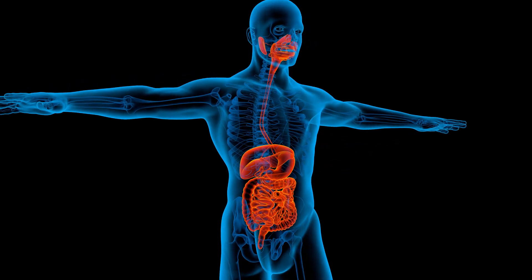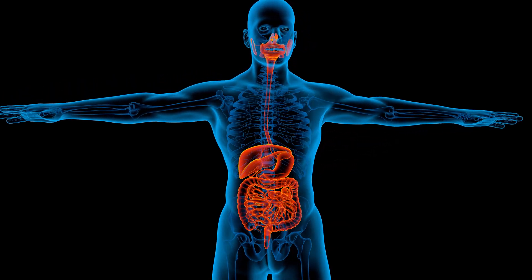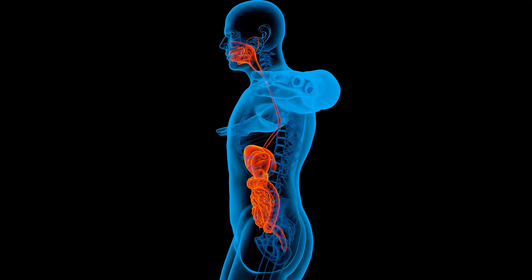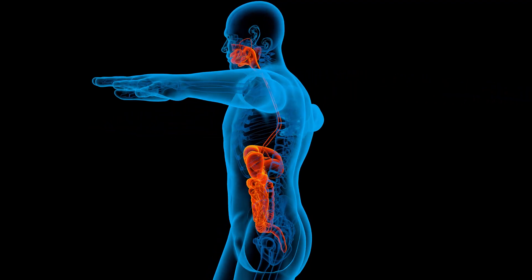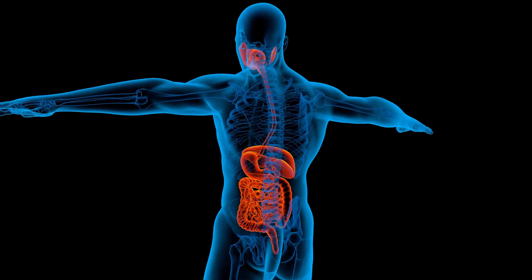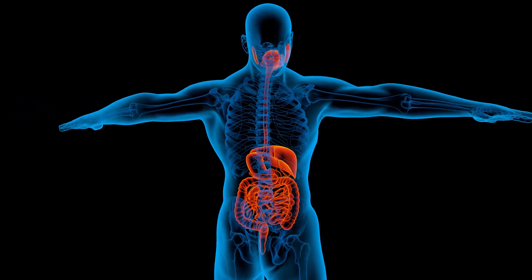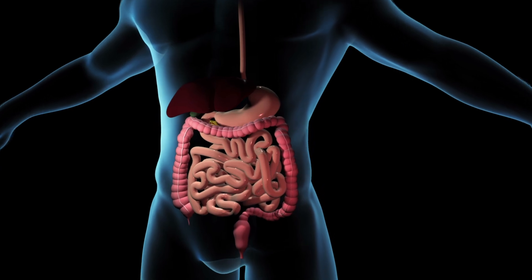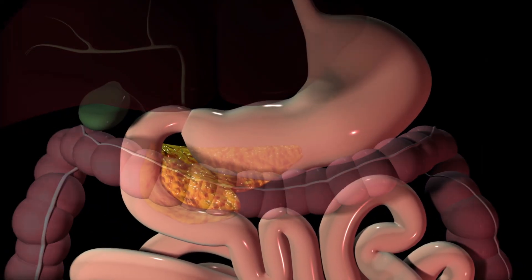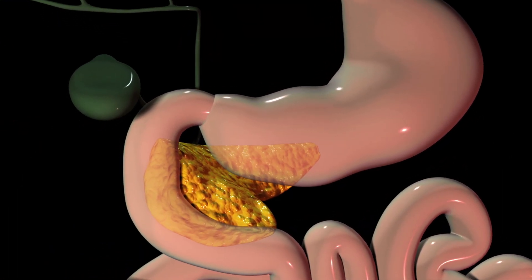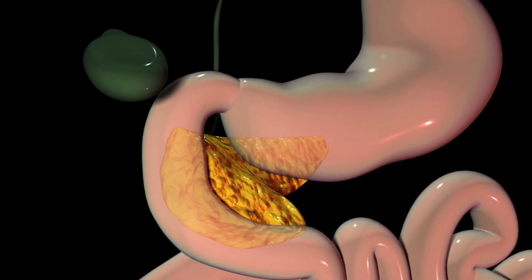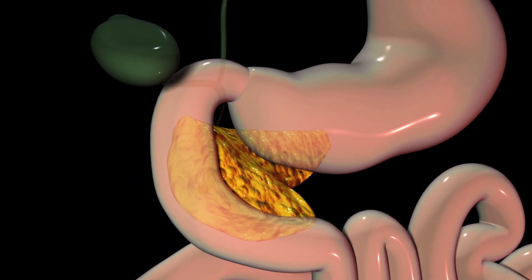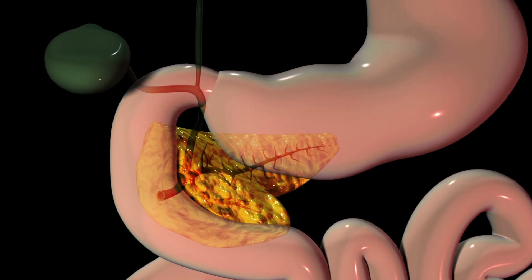In the human body, each organ has certain functions. The pancreas gets its name from its location — it is located behind the stomach, filling the space in the loop formed by the passage of the stomach into the duodenum. It is structured with a head, body, and tail, with a total length of about 20 centimeters and a weight of about 70 grams.